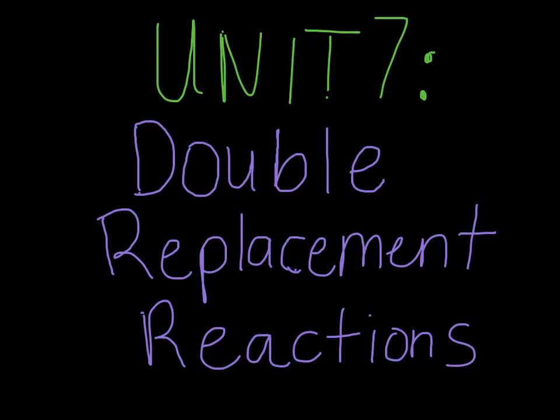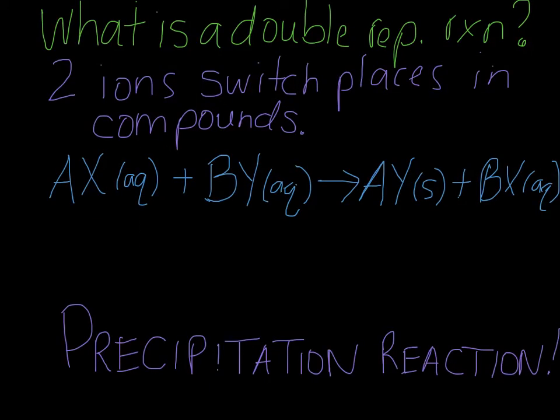Welcome to the last video for unit 7 over double replacement reactions. The first thing I'm going to go over is what exactly is a double replacement reaction. A double replacement reaction is when you have two different compounds and two ions are going to switch places in those compounds.